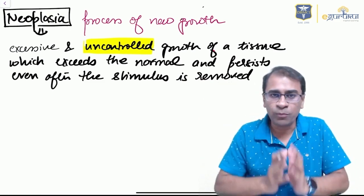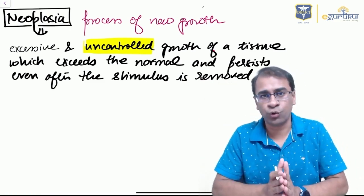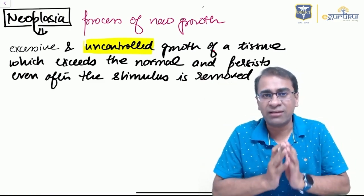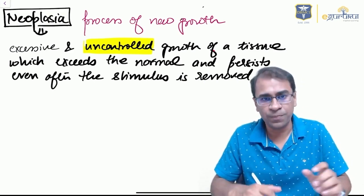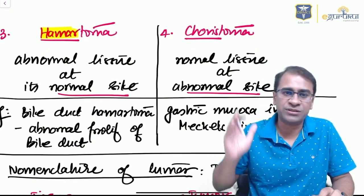Let's start with the definition. Neoplasia is defined as an uncontrolled growth which is more than what is required and continues even when the stimulus is removed. Neoplasia can be of two types: it can be hamartoma or choristoma.